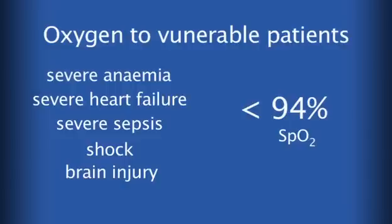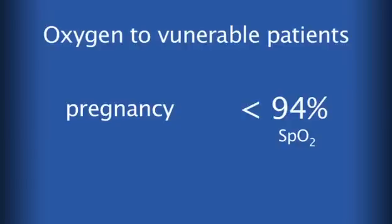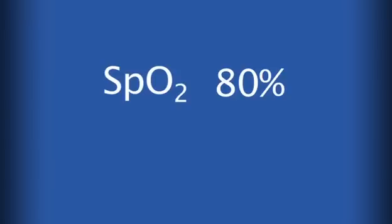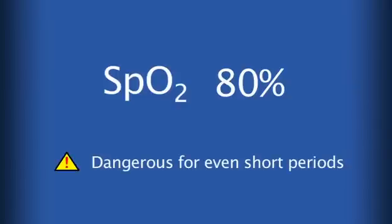In conditions such as shock or brain injury, and also in pregnancy, many clinicians recommend giving oxygen if the oxygen saturation is less than 94%. In pregnancy there are greater demands for oxygen as well as some reduced compensatory mechanisms in coping with illness such as sepsis, haemorrhage, or pneumonia. It's important to understand that even a small reduction in oxygen saturation below 90% can have a critical effect on oxygen delivery to tissues. We only have to go down to an SpO2 of 80% for a relatively short period for this to be potentially of great harm to the patient.